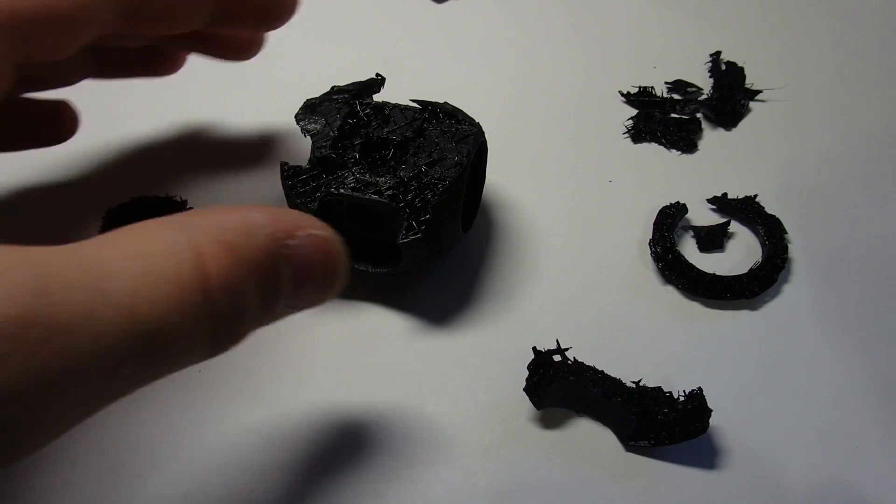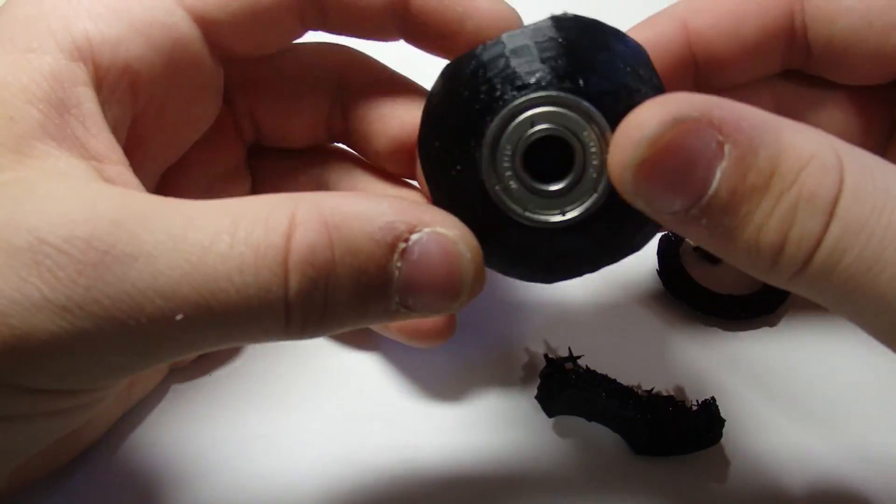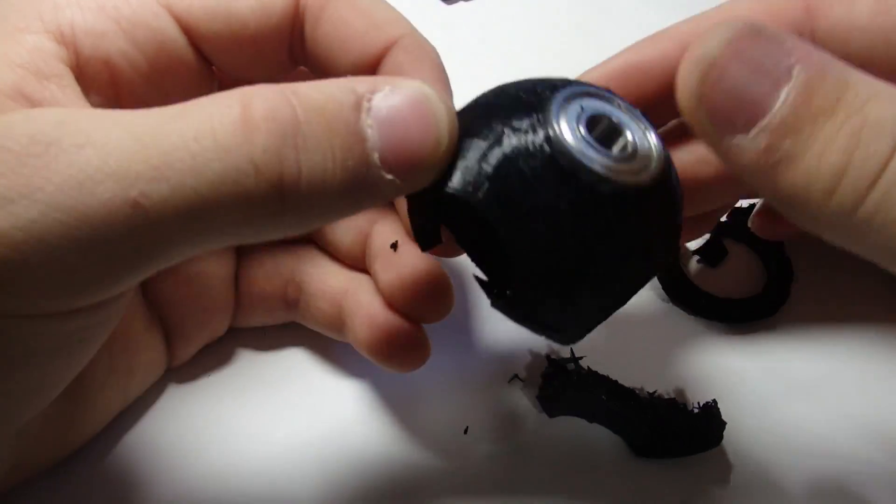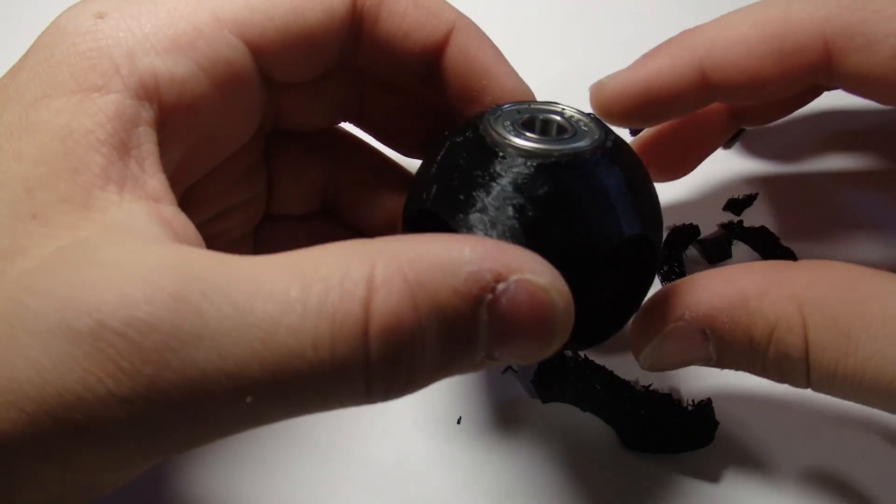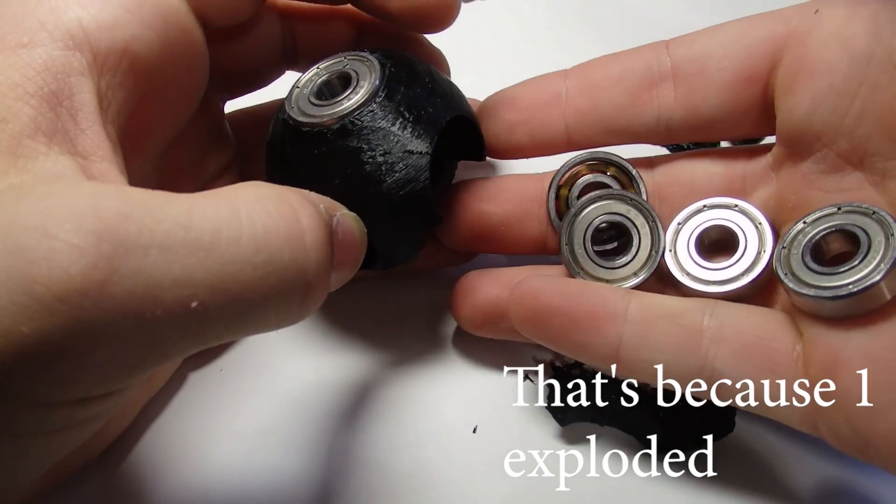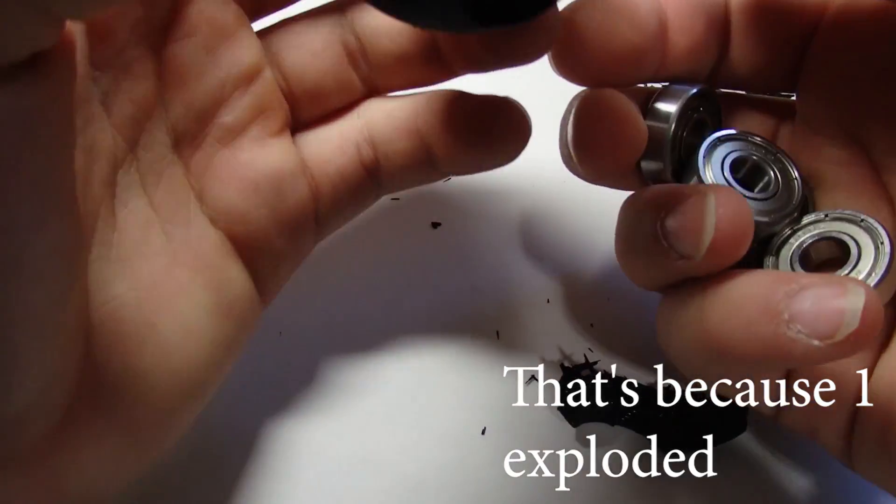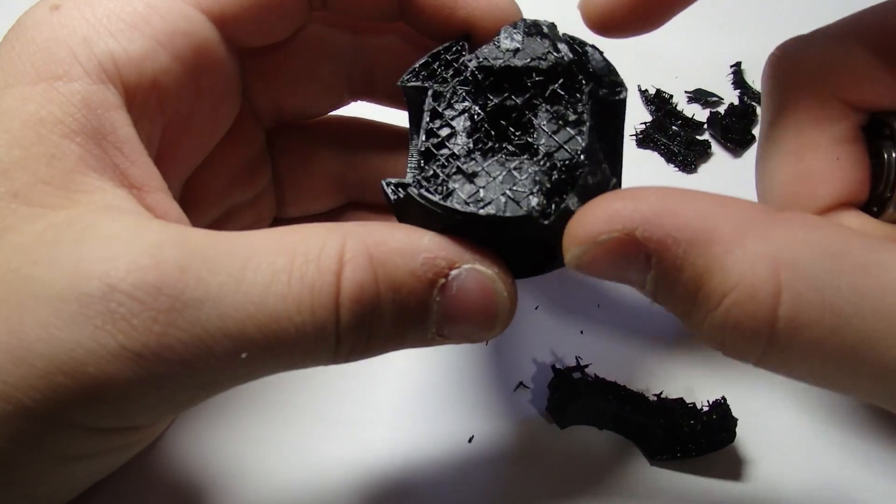So here are the pieces that I managed to recover and it's pretty cool. It actually split off one-third of it, so that's all those pieces that you see all over there. And sadly I only managed to recover back five of the bearings so there's still one out there that I couldn't find. I think that drop test went pretty well. It's actually pretty strong, about as strong as I imagined it was going to be.